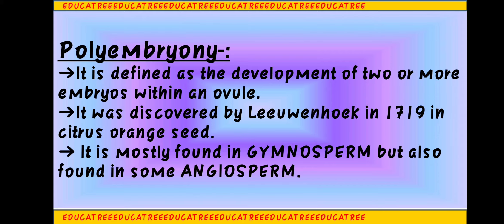If I talk about its discovery, it was first discovered by Professor Leeuwenhoek in 1719, when he was studying citrus orange seed. He first studied Polyembryony in orange seed. And if we talk about its occurrence, Polyembryony is mostly seen in Gymnosperms — like Pinus, Cycas. If you go to a hill station, you will see many Gymnosperms there.